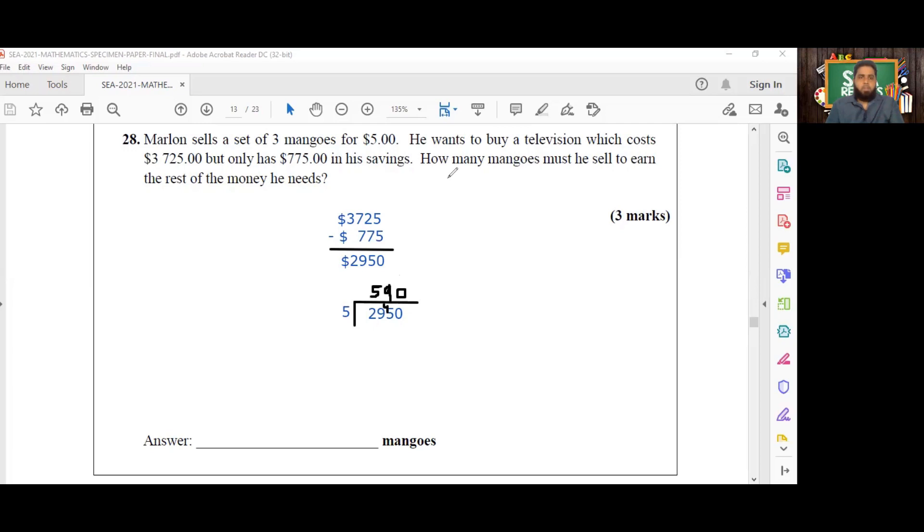So now, if the question asks, how many mangoes must he sell, we have to break this down into the number of mangoes. Therefore, 590 sets multiplied by three because there are three mangoes in a set. And that is going to give us 1,770. So he has to sell 1,770 mangoes.